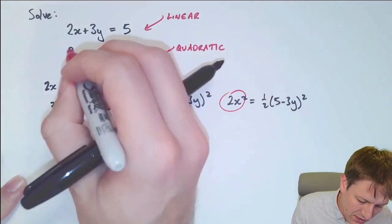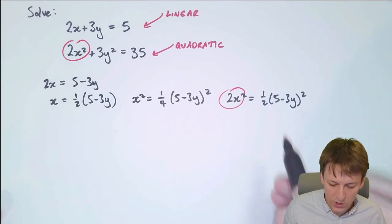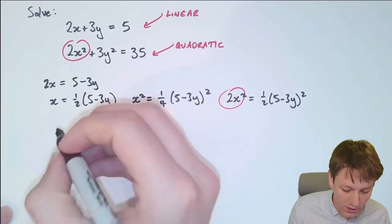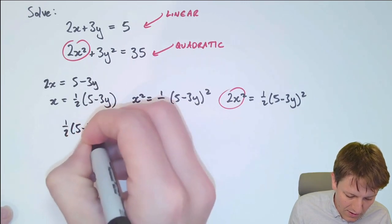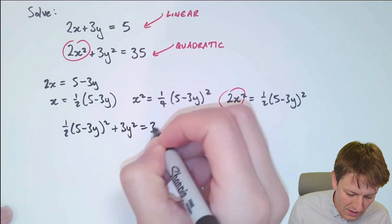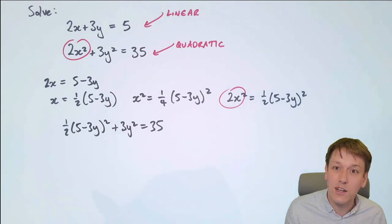So I can substitute in this 2x squared for this 2x squared here in the quadratic equation, which just means replacing the 2x squared with a half 5 minus 3y squared. So we've got a half 5 minus 3y all squared plus 3y squared equals 35. By doing this we've got an equation now that just has y in it, it's a quadratic equation in y, and we can go ahead and solve that.